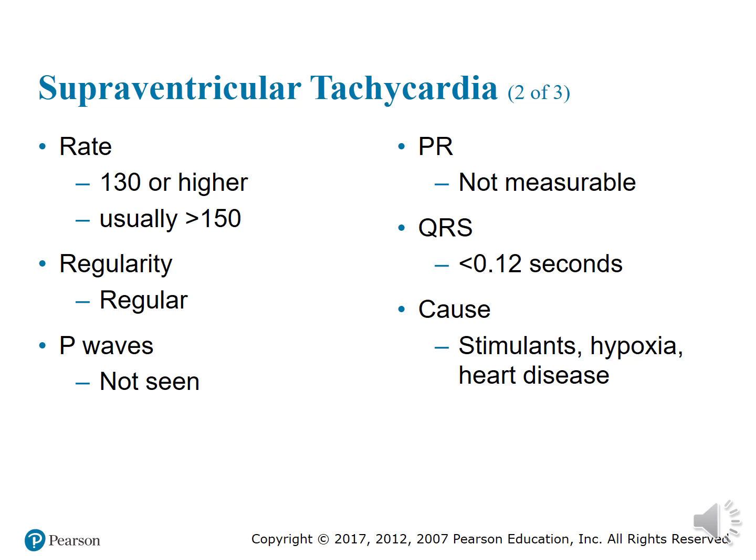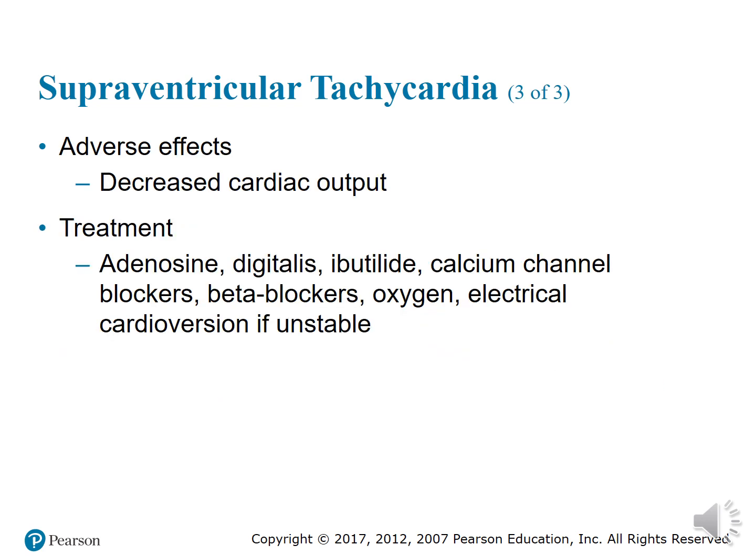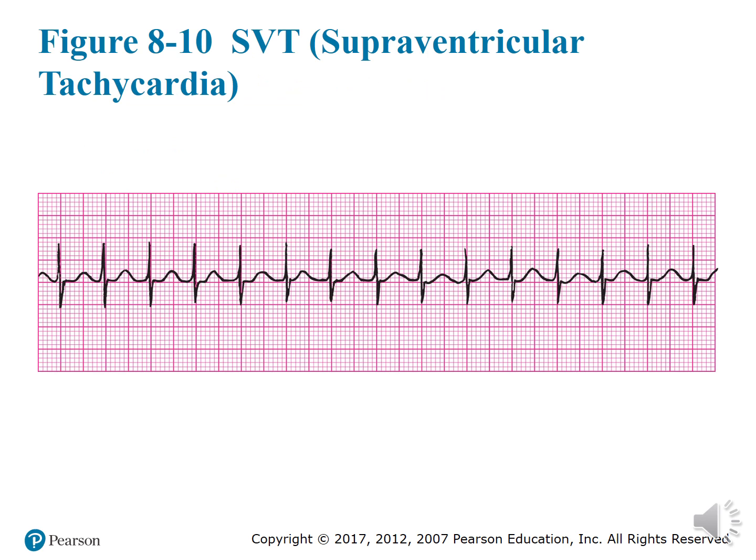Some causes of SVT include stimulants, hypoxia, or some type of heart disease. Adverse effects include decreased cardiac output. Treatments that can be given for SVT are digitalis, calcium channel blockers, beta blockers, oxygen, and electrical cardioversion if the patient or rhythm is unstable. This is what a supraventricular tachycardia looks like — just a super fast rhythm with no P waves, all you see is QRST straight across.